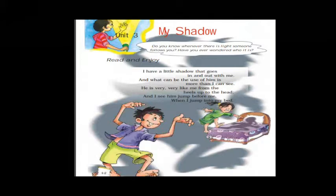Do you know whenever there is a light, something follows you? Have you ever wondered who it is? Whenever there is a light and you are walking, something will be coming behind you — something will be following you. It is your shadow. Shadow means a dark area or shape produced by a body between rays of light and a surface.